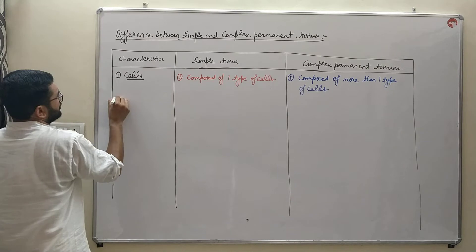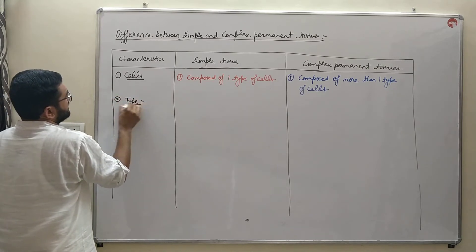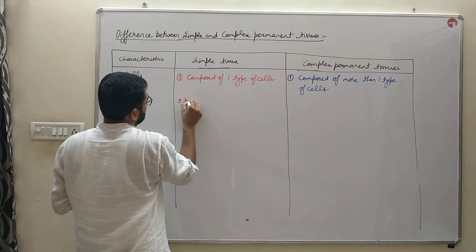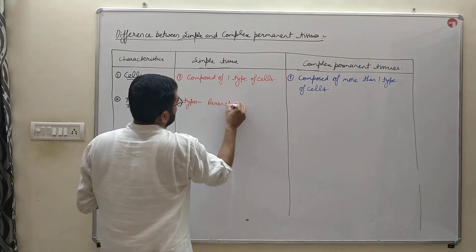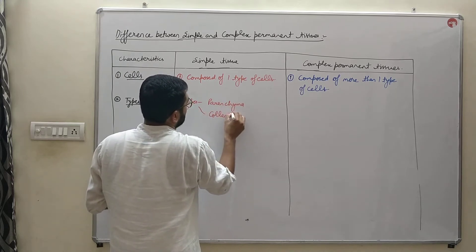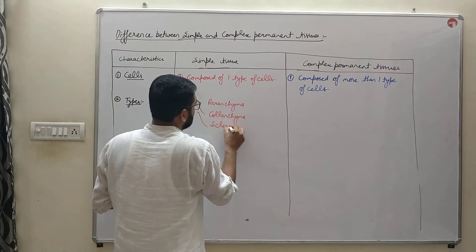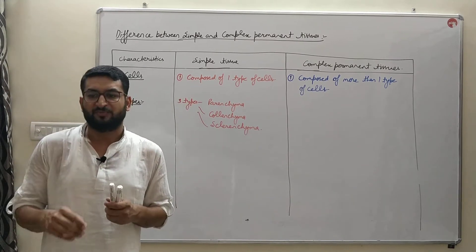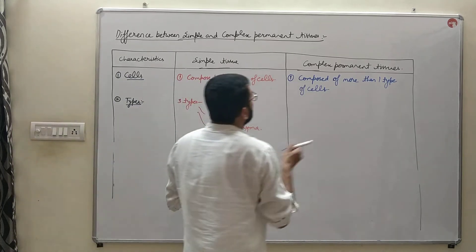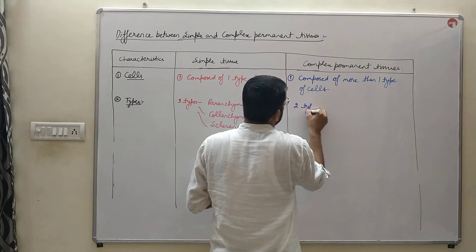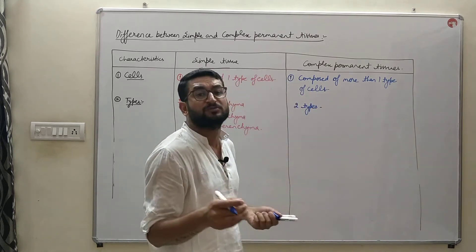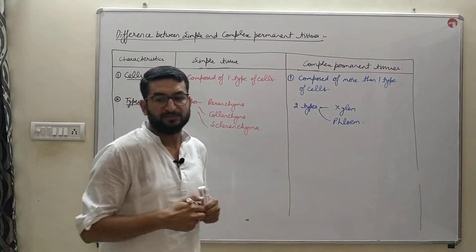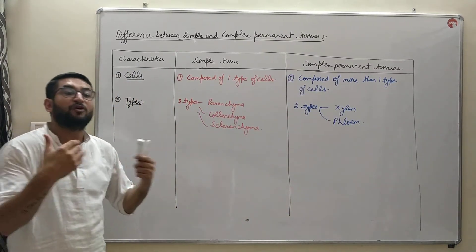The second characteristic on which we differentiate them is type of cells. Simple permanent tissue is of three types: parenchyma, colenchyma, and sclerenchyma — these are the three types of simple permanent tissue present in plants. Whereas complex permanent tissue is subdivided into only two forms: the first one is xylem and the other is phloem. This is the difference on the basis of their forms and sub-types.